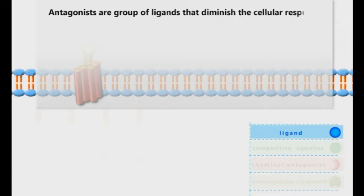Antagonists are a group of ligands that diminish the cellular response when they bind to an empty or an agonist-occupied receptor.